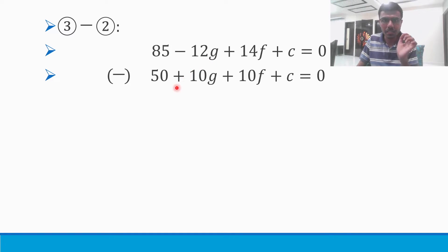Now be careful here. Minus 12g minus 10g—minus is there, it is practically minus 12g minus 10g, which is nothing but -22g. Next I have 14f minus 10f which is nothing but 4f, and c minus c would go away.